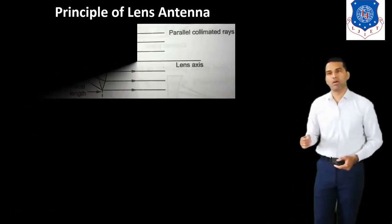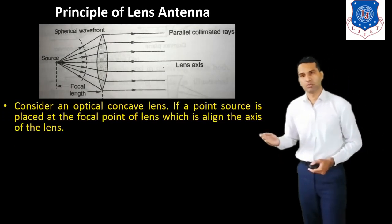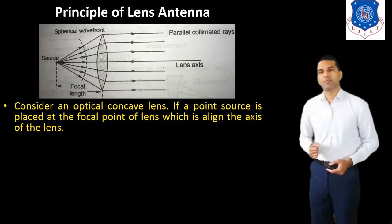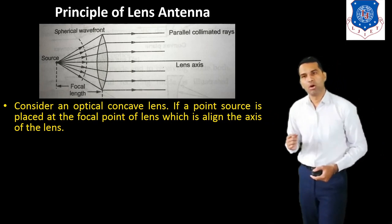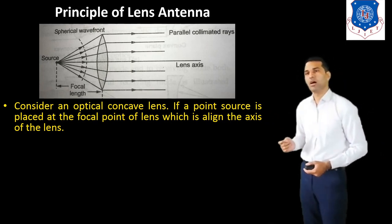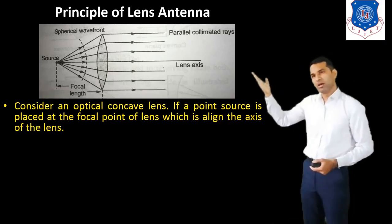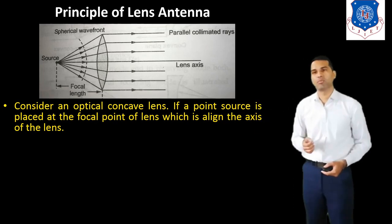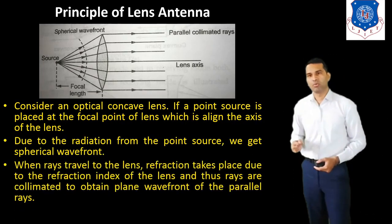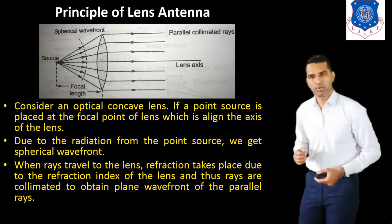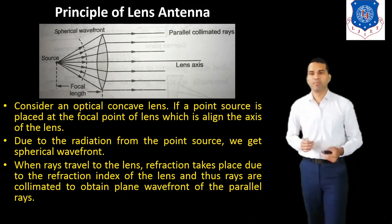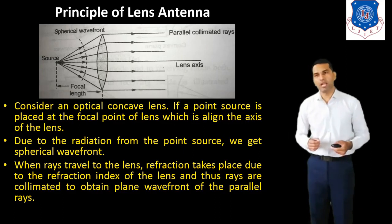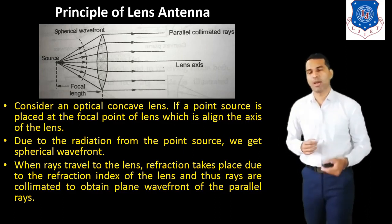Now we discuss the principle of the Lens Antenna — how it works. Consider an optical convex lens. If a point source is placed at the focal point of the lens, aligned with the axis of the lens, as seen in this figure, due to radiation from the point source we get a spherical wavefront. When rays travel to the lens, refraction takes place due to the refractive index of the lens, and thus the rays are collimated to obtain a plane wavefront of parallel rays.